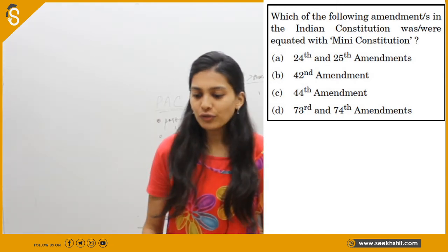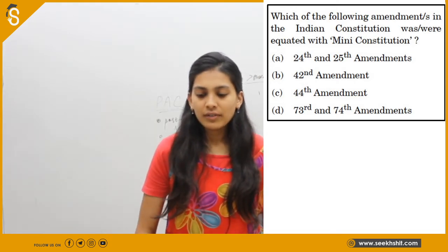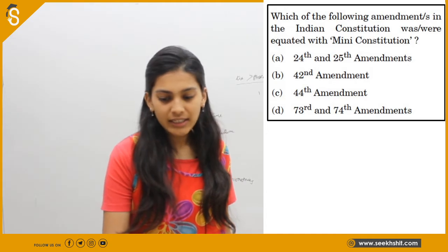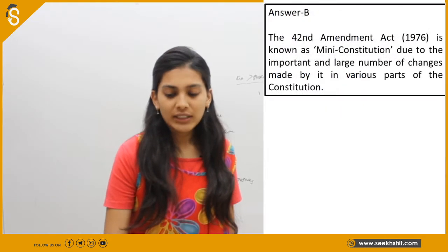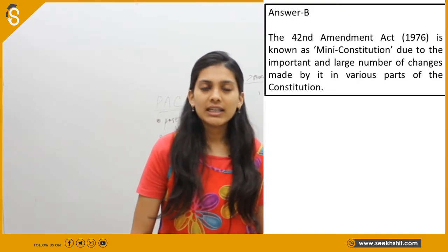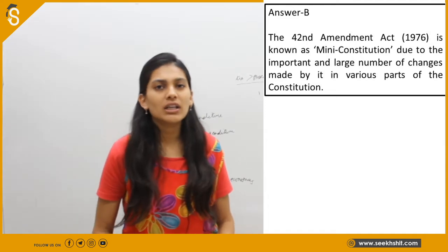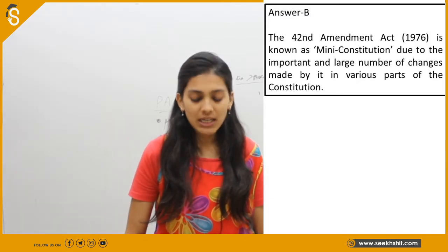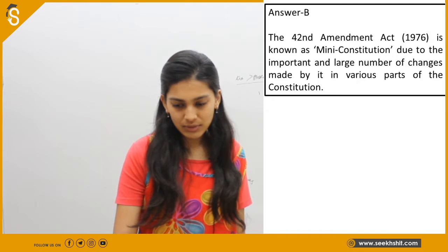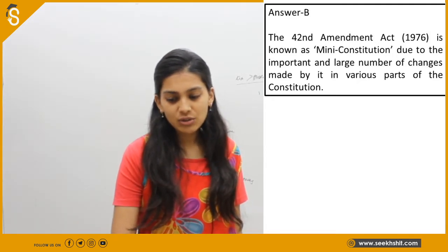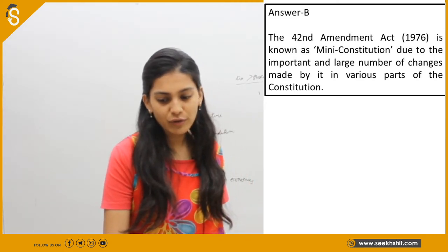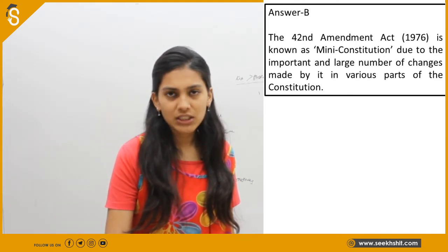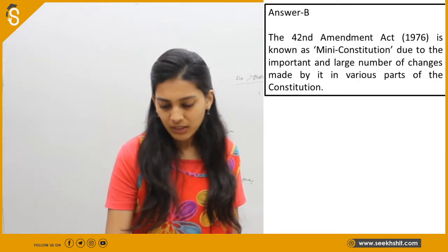The next question asks which amendment of the Indian Constitution is equated with 'mini constitution.' The answer is the 42nd Amendment. The 42nd Amendment was created in 1976 and made such a large number of changes to various parts of the Constitution that no part was left unchanged. That is why it is known as the mini constitution.